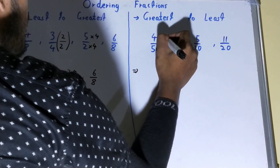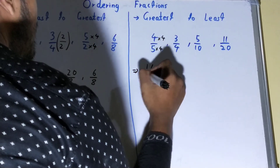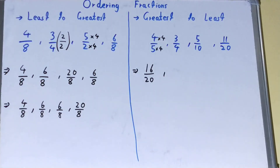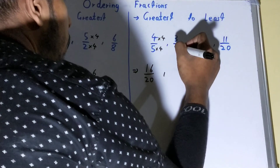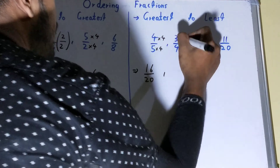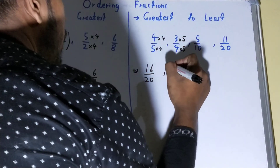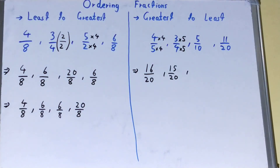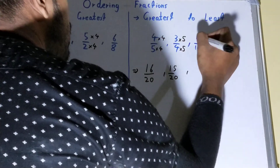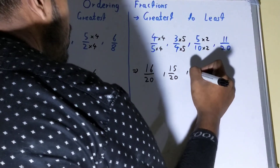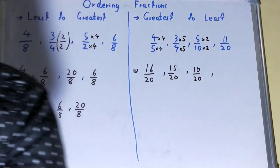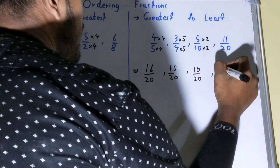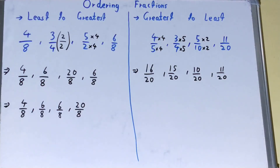For the first fraction, to make the denominator 20 we multiply by 4 in the numerator and denominator — it becomes 16 over 20. The second fraction has 4 as denominator, so we multiply by 5 — it becomes 15 over 20. The third fraction has 10 as denominator, so we multiply by 2. The last fraction already has 20 as the denominator.